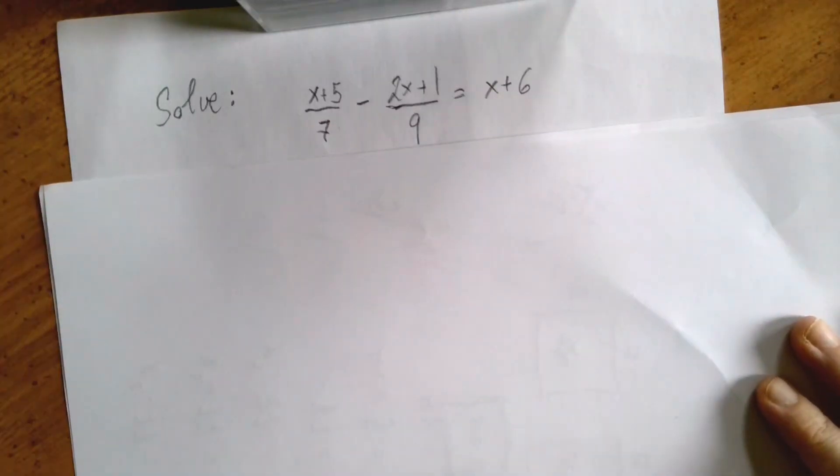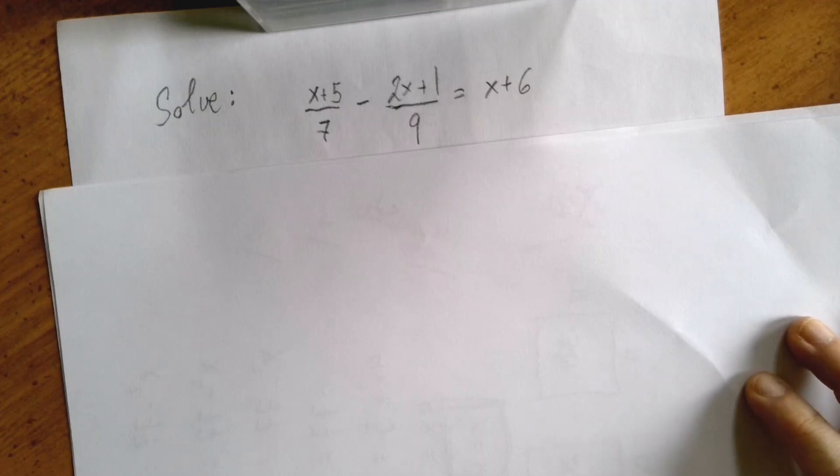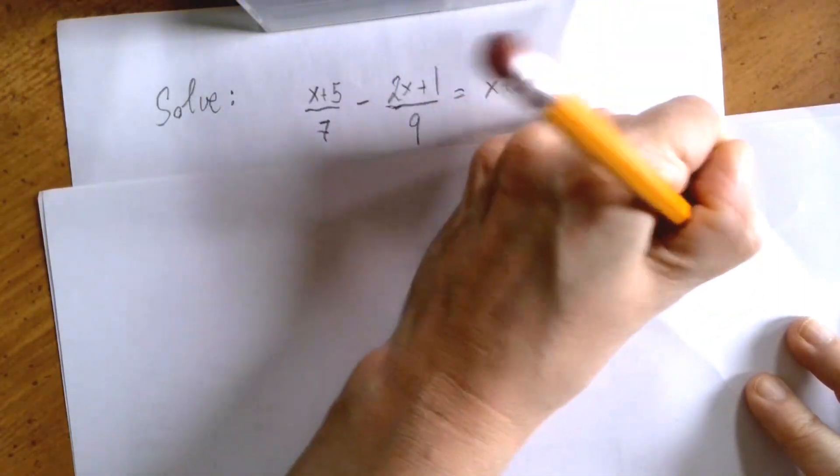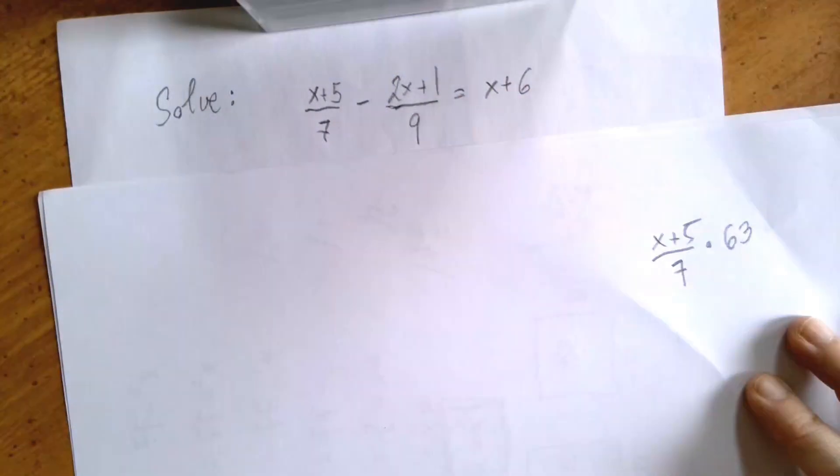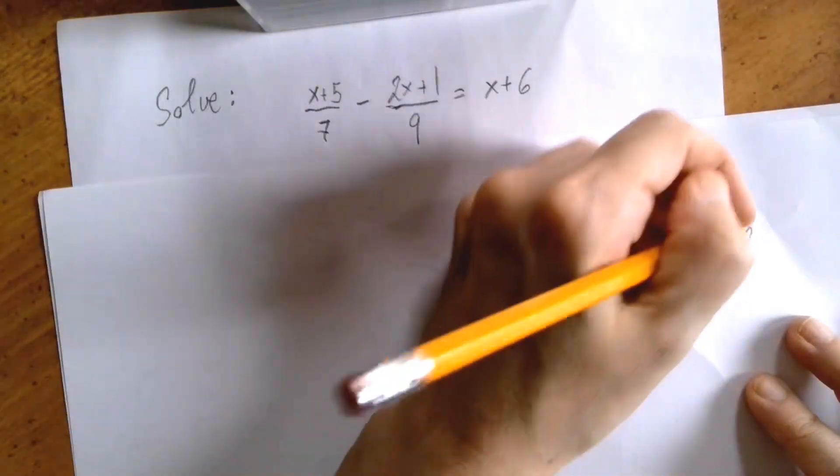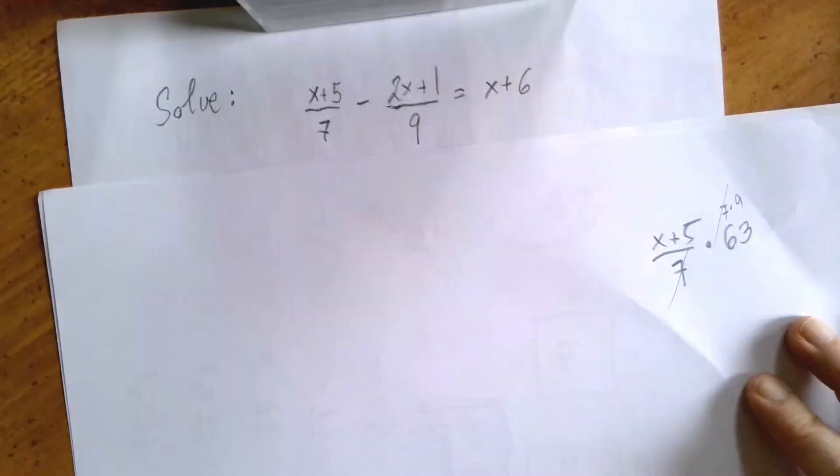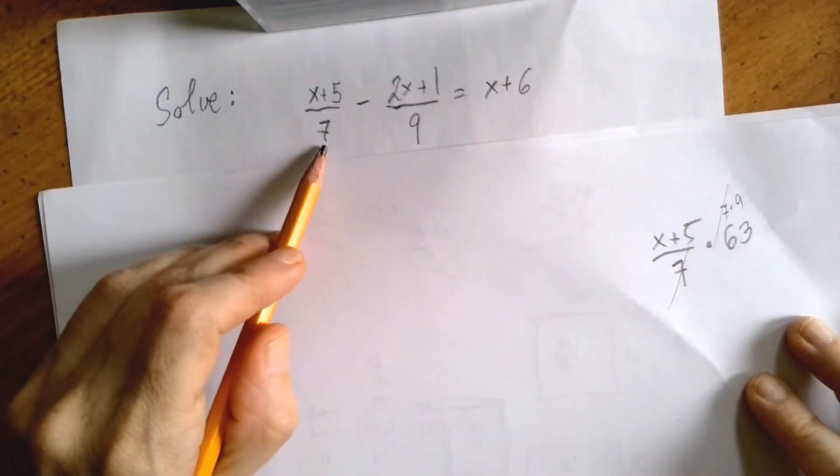We identify 63 as the common denominator. And then we're going to multiply by it. So when I grab x plus 5 over 7 and I multiply it by 63. Well, 63 is divisible by 7. It's 7 times 9. And so that gets knocked out and you're left with a multiplier of 9.